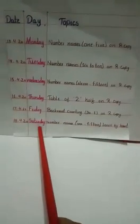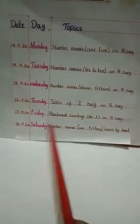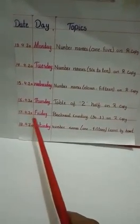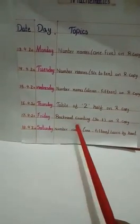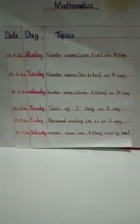18 April Saturday and 17 April Friday: backward counting 30 to 1 on rough copy. Backward counting 30 to 1 — we don't go forward, we go back.